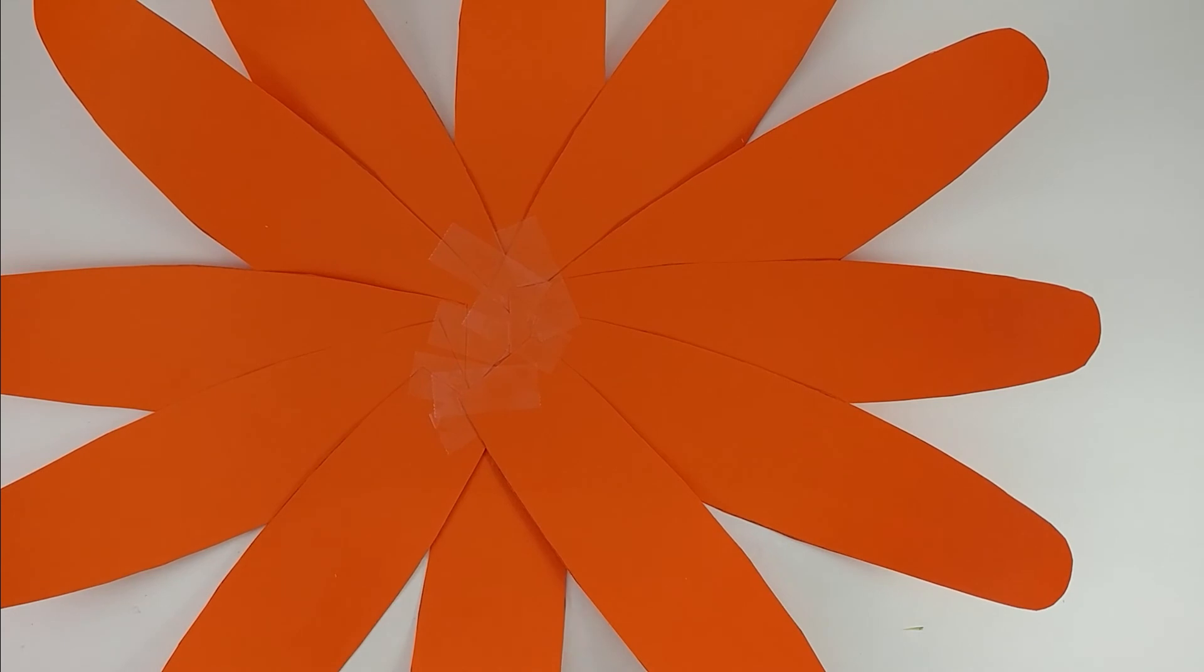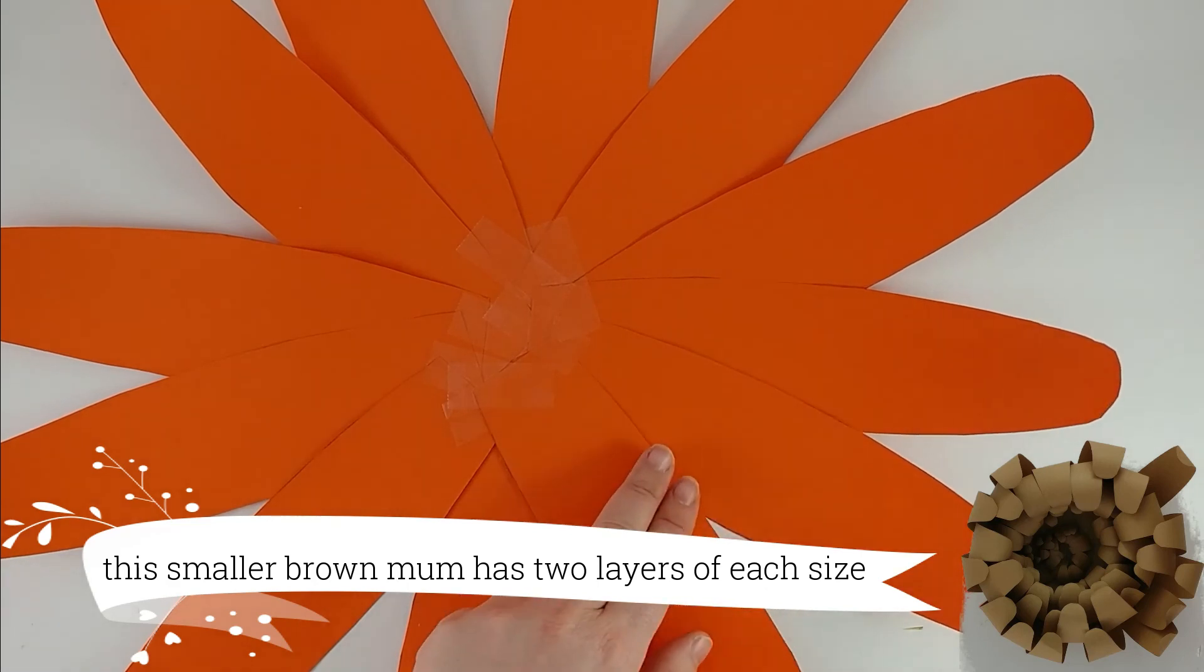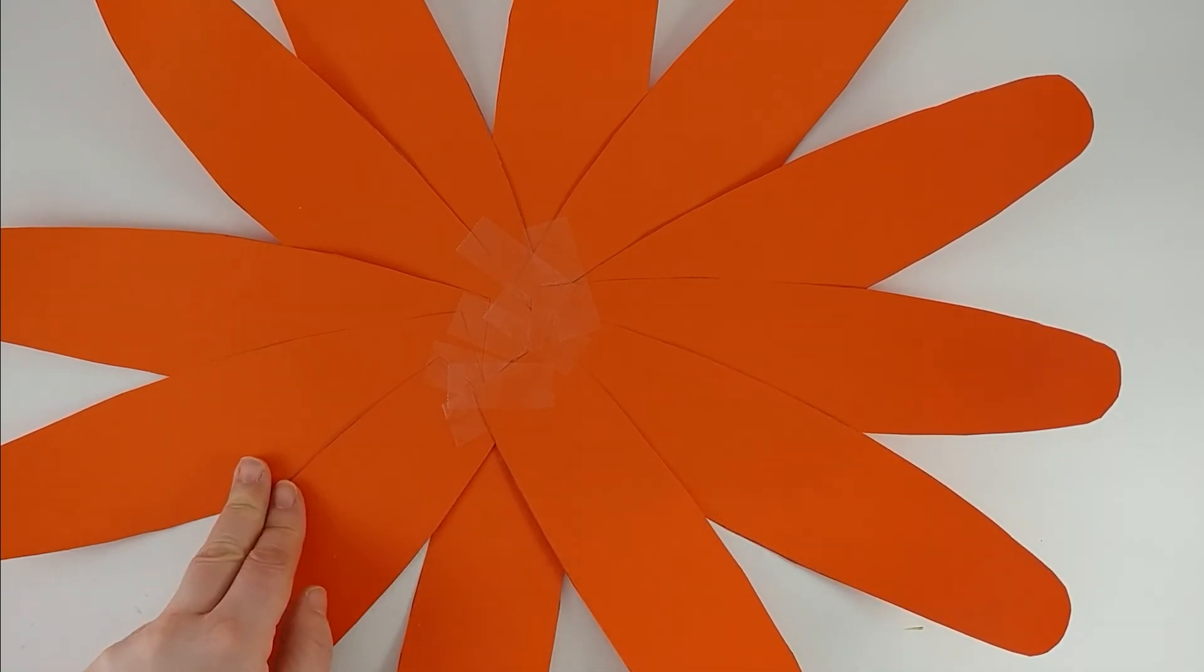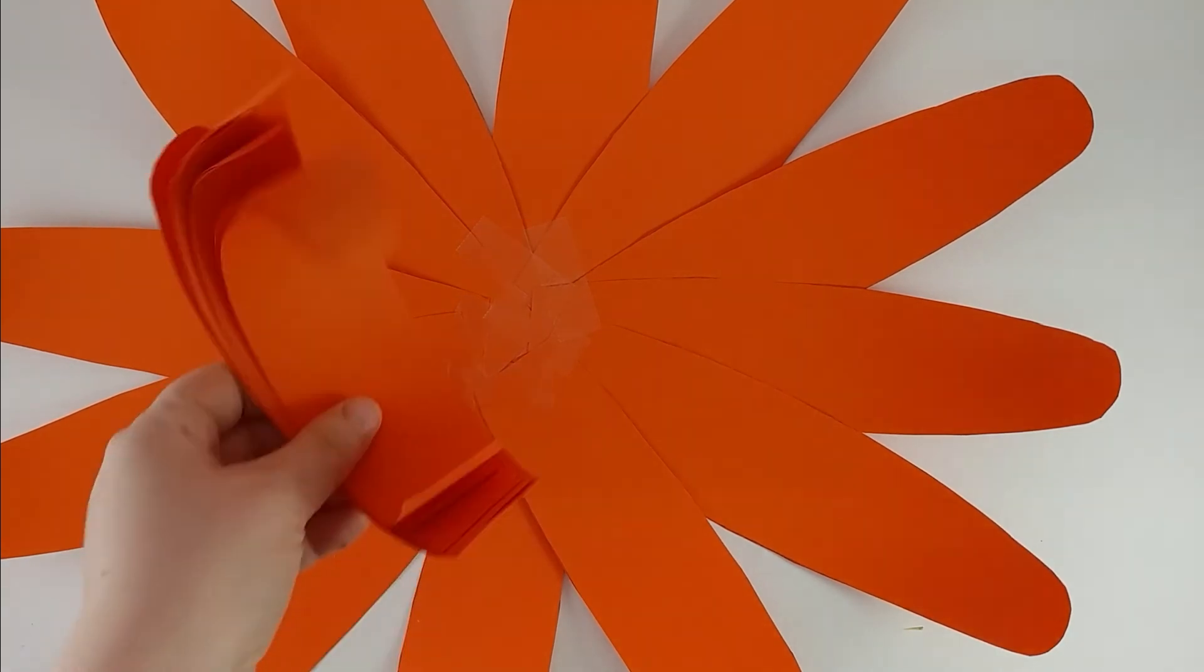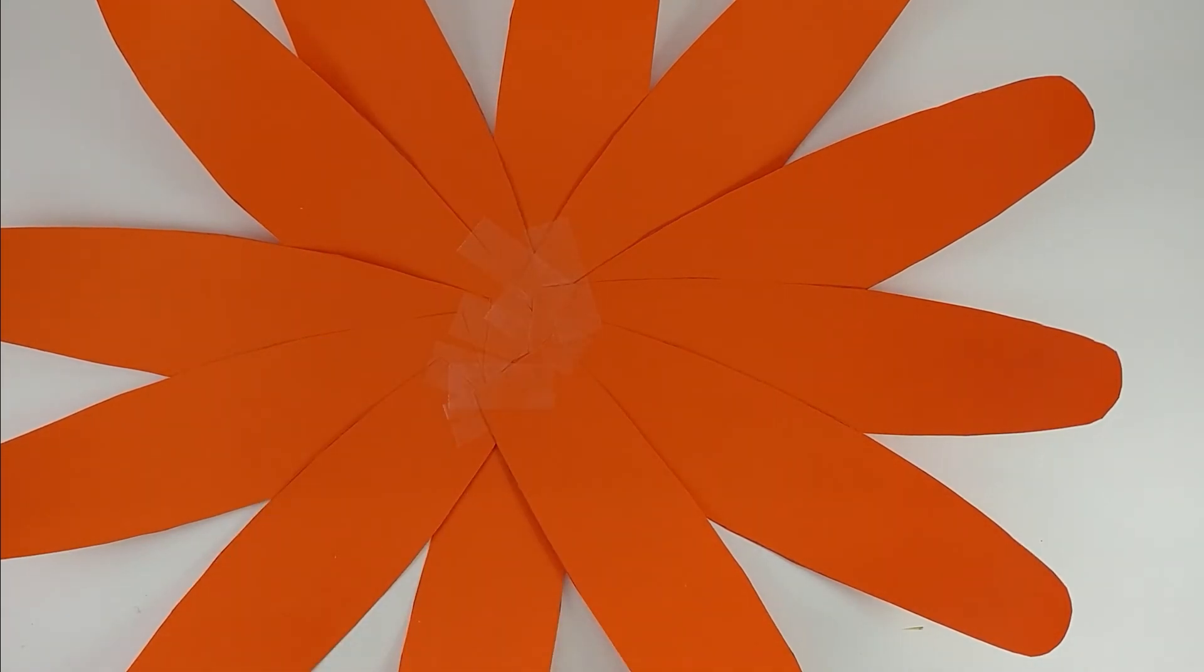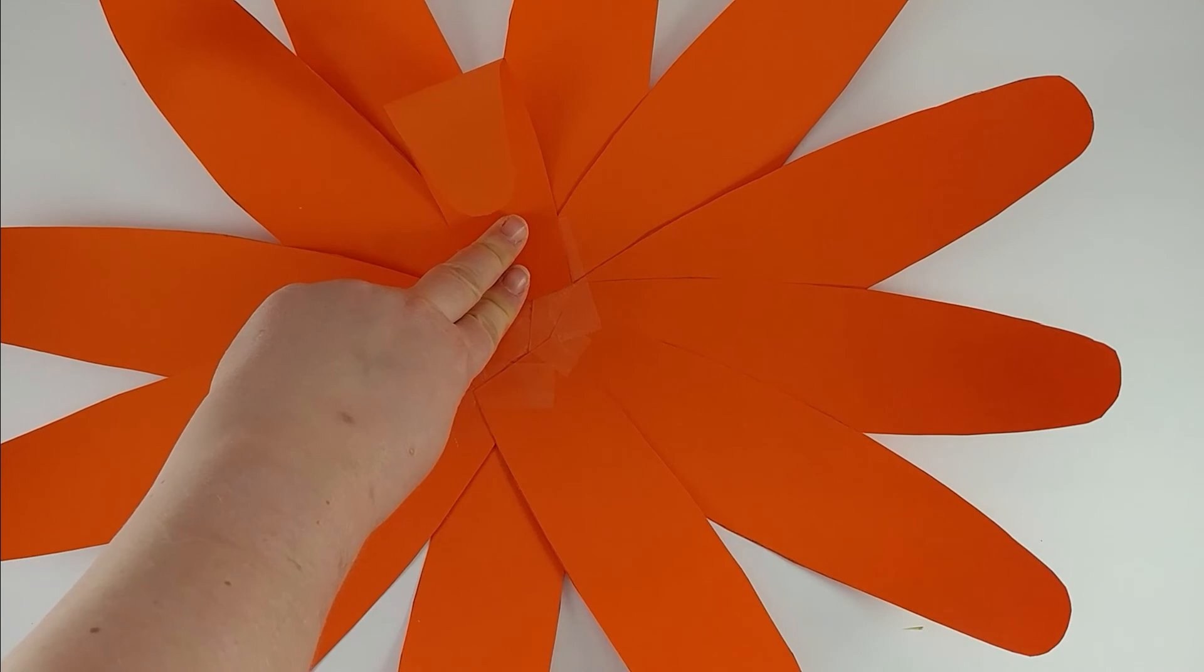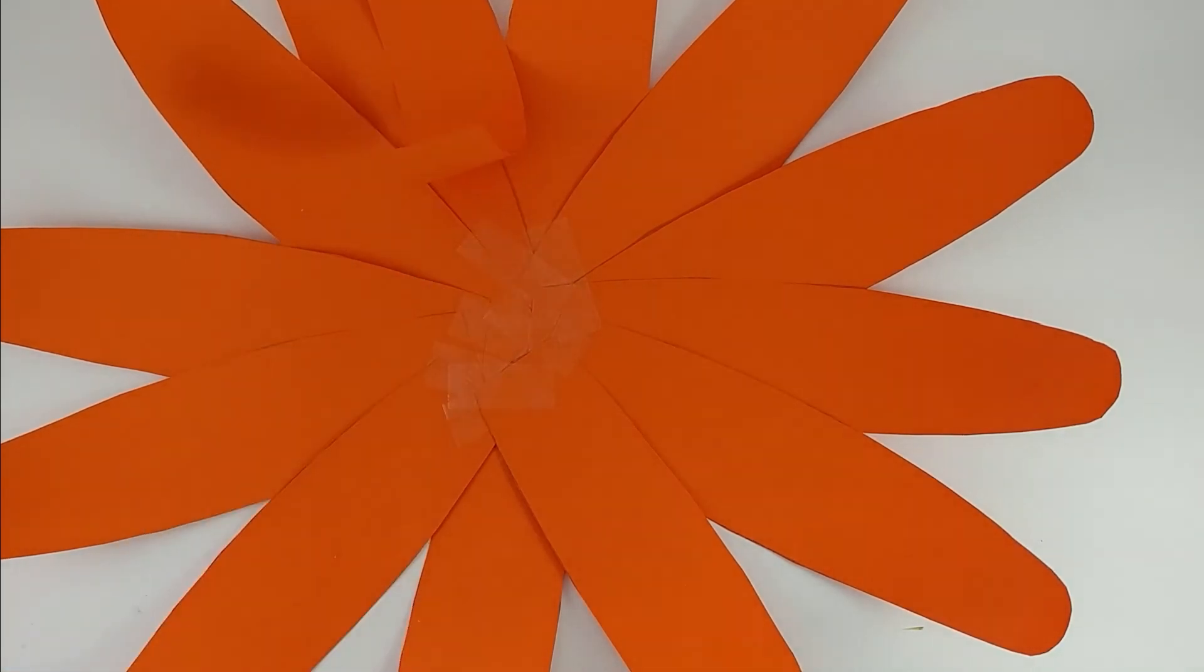Ideally I would have another set of petals this same size to go in between all of the previous layer. But instead, based on what I've already cut out, I'm going to add my second layer instead. For these I'm just going to go ahead and tape it right on top of the existing petals. You don't need to space these out too much because I've already got my guide. I'm just putting them between all the other petals.